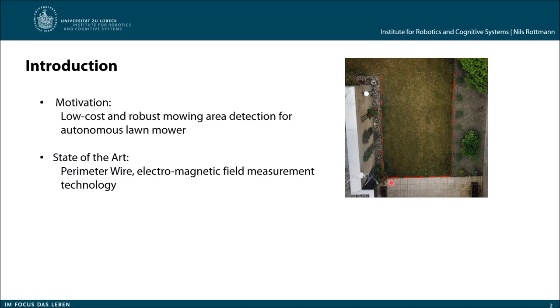What happens is that there is a current flowing through this perimeter wire, and this current induces an electromagnetic field which can be measured by the lawnmower with special sensors. So with the state-of-the-art technology we need this perimeter wire and also some sensors on the robot. It's quite an expensive sensor system.